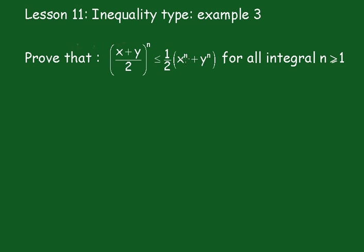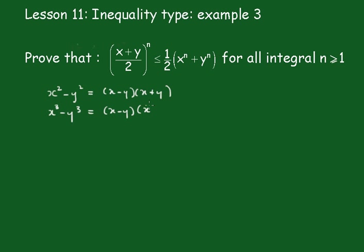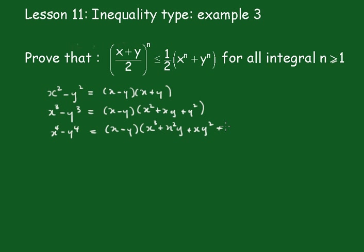Before we do this, we need to have a little identity worked out. To start with, it's familiar that x squared minus y squared equals x minus y times x plus y. You also know that x cubed minus y cubed equals x minus y times x squared plus xy plus y squared. You may not know this one: x to the fourth minus y to the fourth equals x minus y times x cubed plus x squared y plus xy squared plus y cubed.